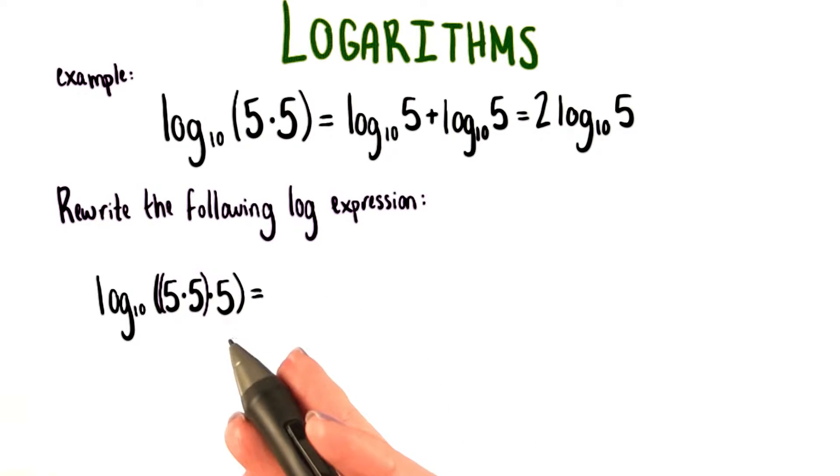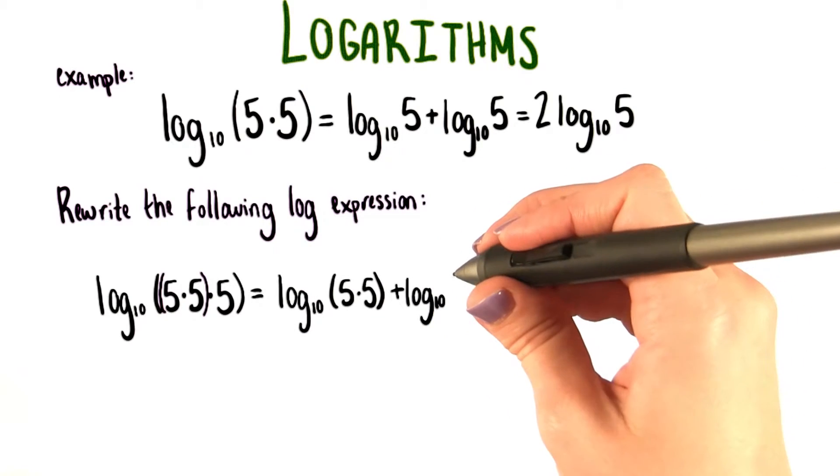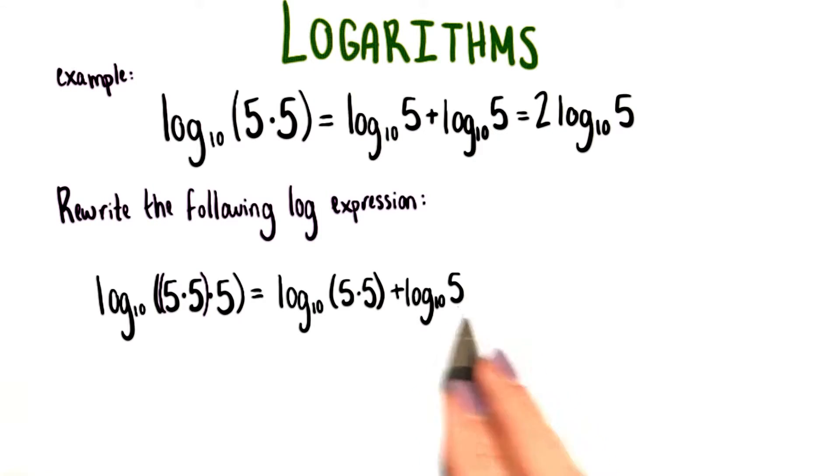And we know how to use the product rule in a situation like this. This is just going to be equal to log base 10 of 5 times 5 plus log base 10 of 5.